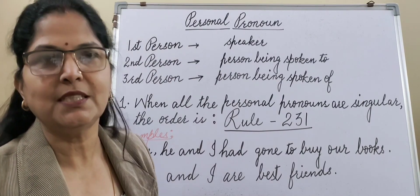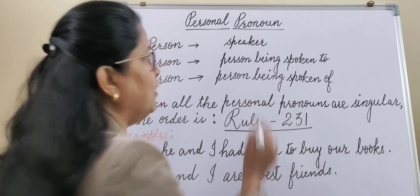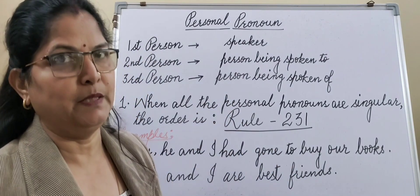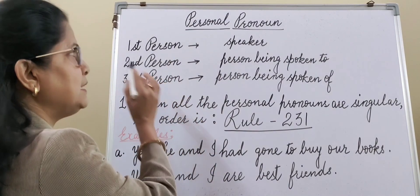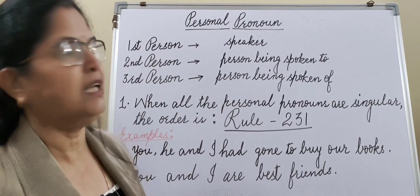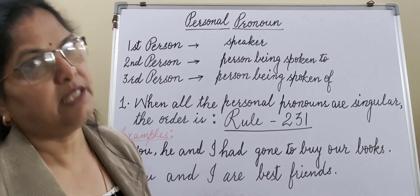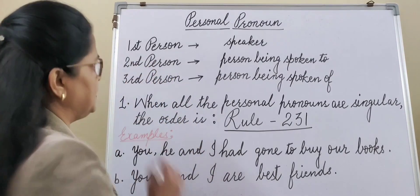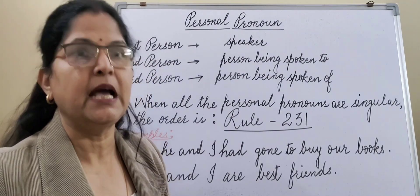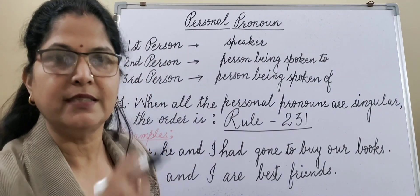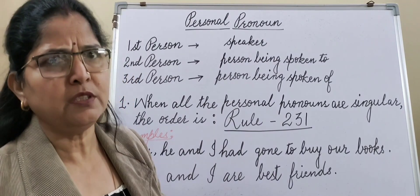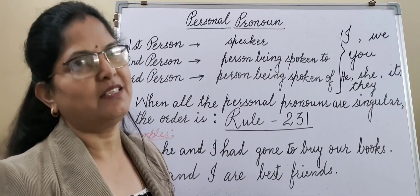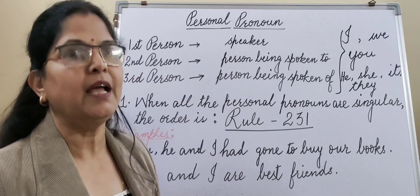We are going to study in detail about the arrangement of these three persons — how we arrange when first person, second person, and third persons are all used together in one sentence. Can we use them in random order? No. That is what we are going to study today. Let's understand Personal Pronouns in singular and plural form.